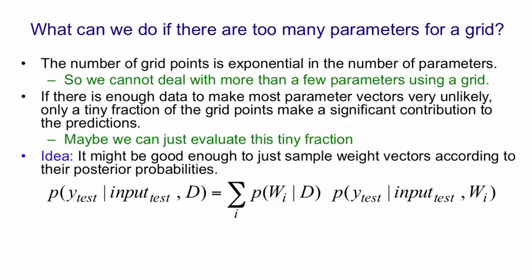So if you look at this equation, the probability that we assign to a test output given the input for the test case and the training data is the sum over all points in weight space of the posterior probability of that point in weight space given the training data times the probability distribution for the test values that we predict given that point in weight space WI and given the test input.